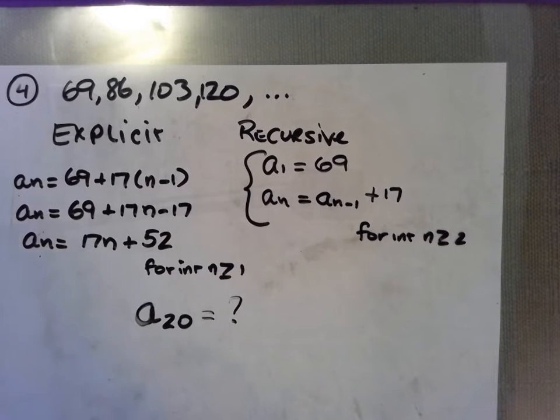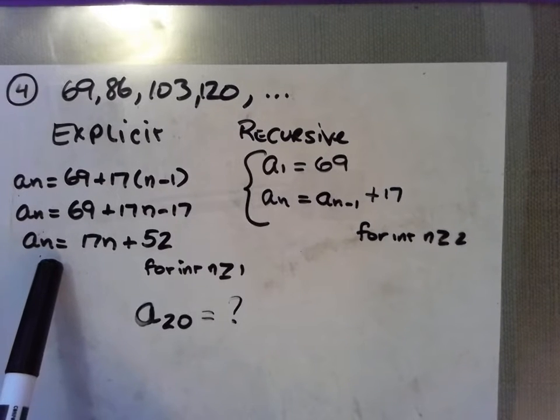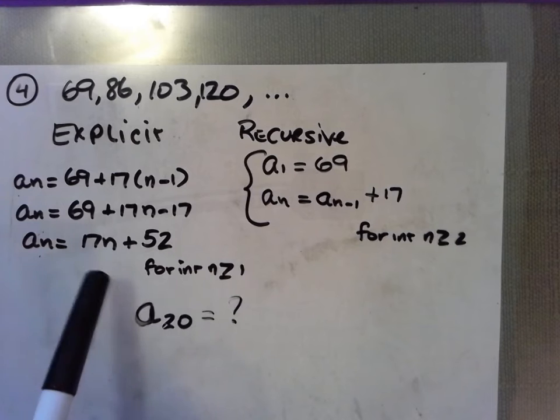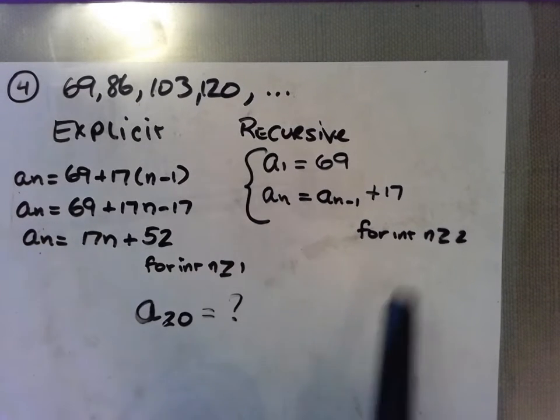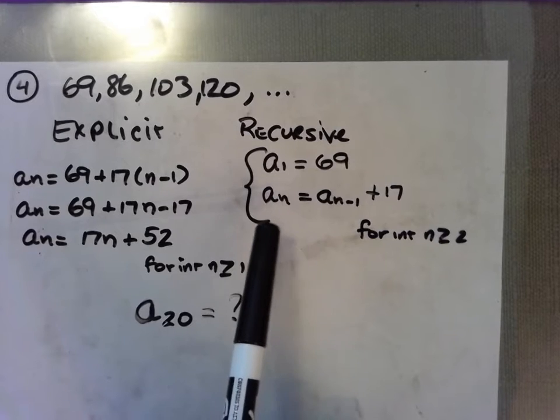If you said explicit formula, I think that would be the wisest idea. I just plug in 20, the value of the term number, to get the value of the 20th term. What would I need to do to find the 20th term with this formula?